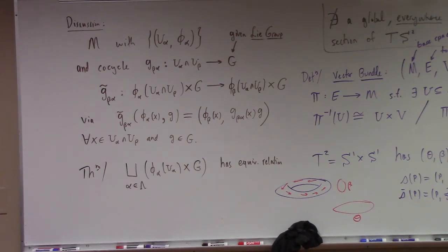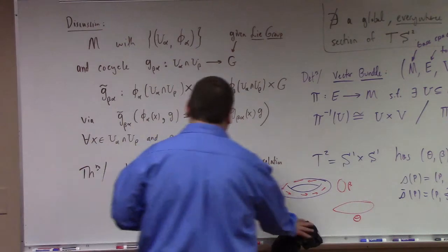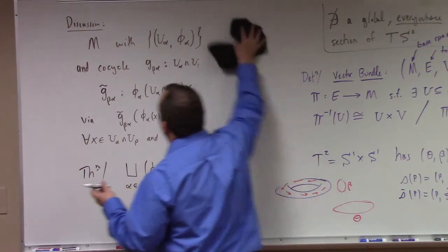The point is that by working on that equivalence relation you can glue together these, let's see here, what is phi alpha of u alpha, that's actually a subset of RN. So this is a way of piecing together Cartesian products with a group to form some sort of fiber bundle where the transition functions have to do with these co-cycles. Okay, this is not happening in the current language, I don't think this is productive at the moment the way I'm saying it.